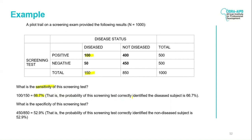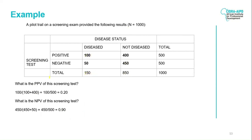To calculate specificity, we take the 450 true negatives divided by false positive plus true negative, which is 850, and you get 52.9%. This is the probability of the screening test correctly identifying the non-disease patients. To calculate PPV, you take the 100 true positives divided by true positive plus false positive, which is 500, and you get 20%. To calculate NPV, you take the 450 true negatives divided by true negative plus false negative, which is 500, and you get 90%.